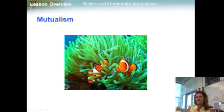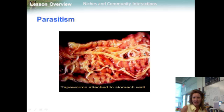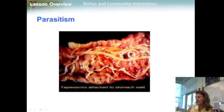Moving on to something a little less happy: tapeworms live in the intestines of mammals where they absorb large amounts of their host's food. Fleas, ticks, lice, and leeches live in the bodies of mammals and feed on their blood and skin. These are examples of parasitism — relationships in which one organism lives inside or on another organism and harms it. The parasite obtains all or part of its nutritional needs from the host. Generally, parasites weaken but do not kill their host, which is usually larger than the parasite.